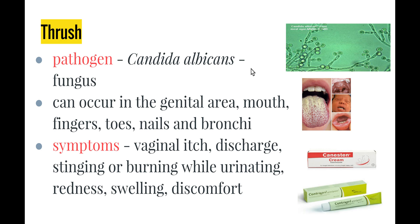Thrush can occur in the genital area, in the mouth, on the fingers, toes, nails and bronchi. The most commonly discussed form is genital thrush. Symptoms include vaginal itch, discharge, stinging or burning while urinating, redness, swelling and discomfort in the area.